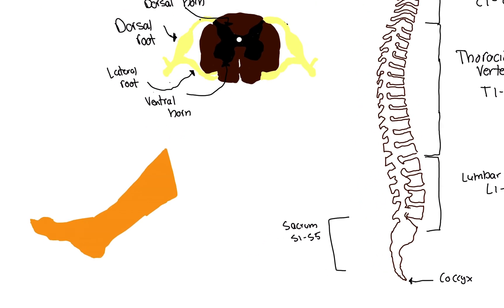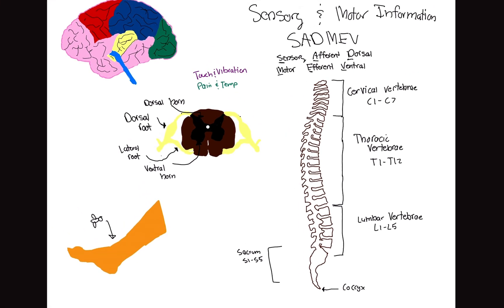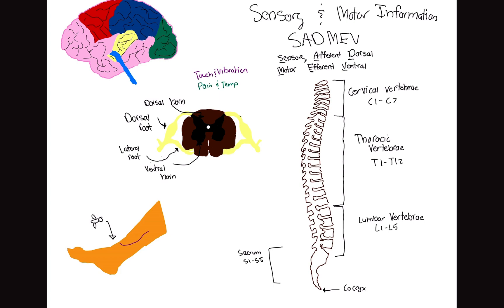I drew a leg here, just for example, and we're going to go over this little pathway. Say a bee stings you on your leg. That stinging sensation or the pain starts from your leg, because that's where it happened. You're going to have a nerve there, and it's going to enter the spinal cord.